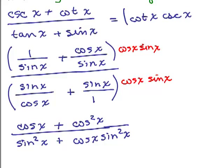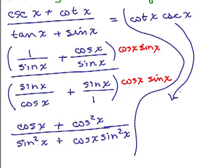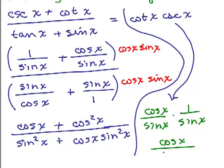So if I put everything, cotangent X cosecant X, into sines and cosines, I get cosine X over sine X times 1 over sine X. So I would get cosine X over sine squared X.